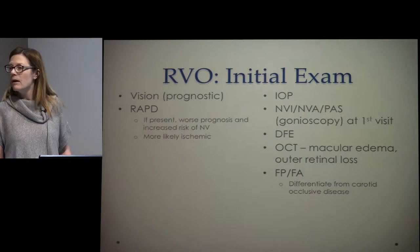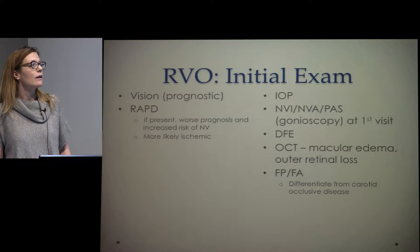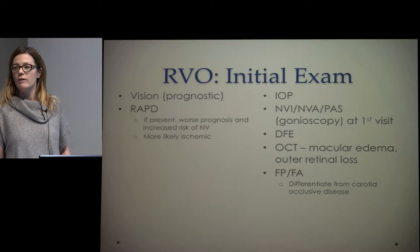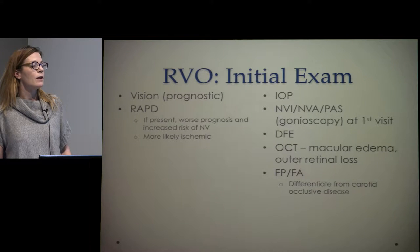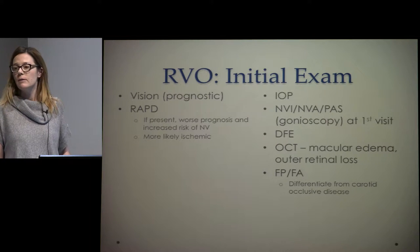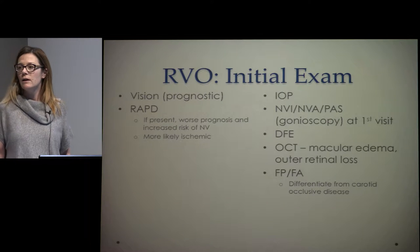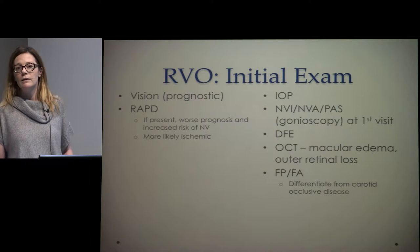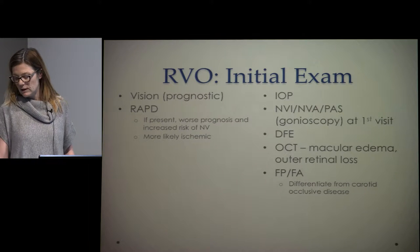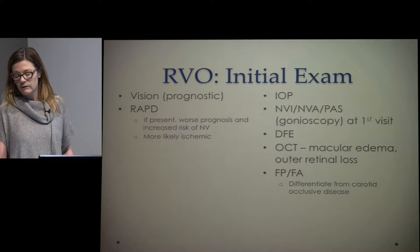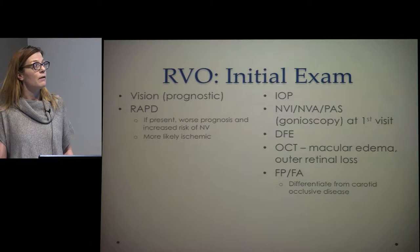At that first visit you want to measure intraocular pressure closely, because if they have early neovascularization of the angle they can have early glaucoma, which would affect your treatment. You'll do a dilated exam, fundus photography, and fluorescein — the fluorescein can be really helpful in differentiating a vein occlusion from ocular ischemic syndrome. OCT will also be done at the first visit and then monthly thereafter.